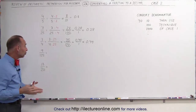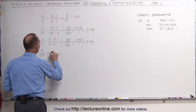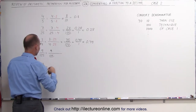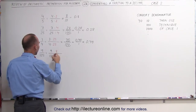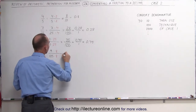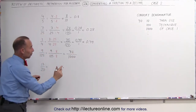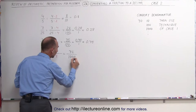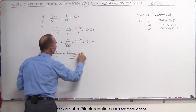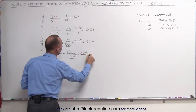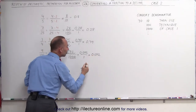125 fits evenly into 1000 eight times. That means we can change this fraction by multiplying both the denominator and the numerator by 8. Multiply the denominator times 8 and the numerator times 8: the denominator becomes 1000 and the numerator becomes 72. To turn into a decimal, we move the decimal place 3 times in the denominator to turn it into 1, and the same 3 spots in the numerator. This becomes 0.072, meaning 9 over 125 equals 0.072.